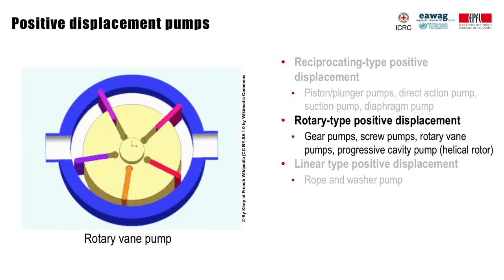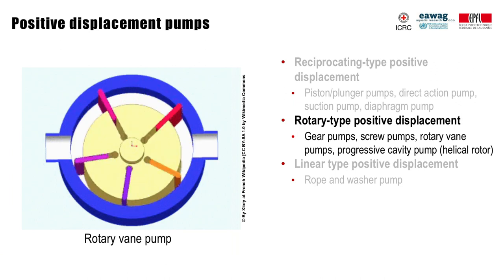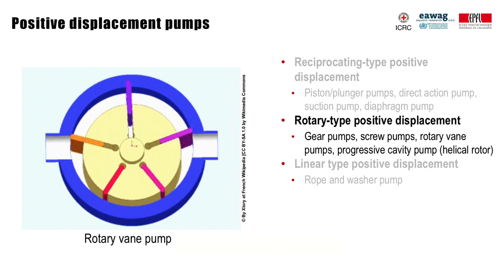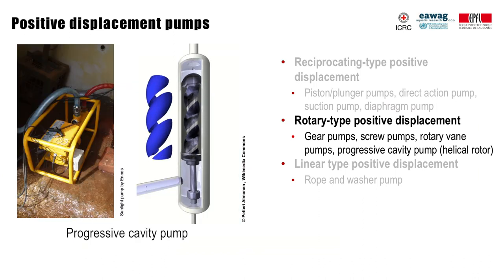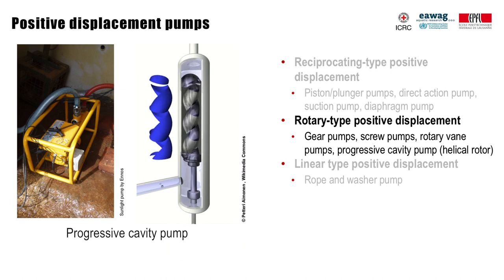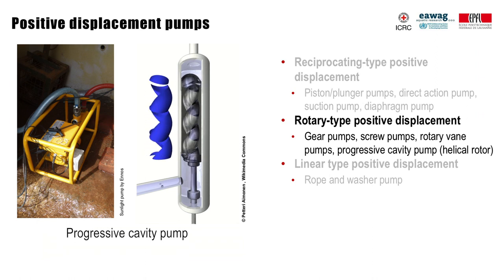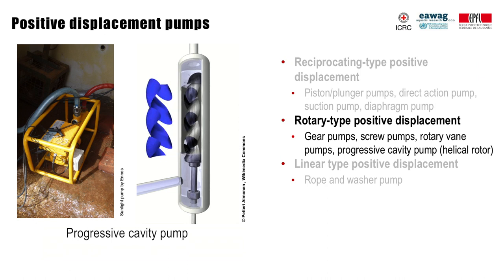Rotary type positive displacement pumps use rotating mechanisms that create vacuum and capture and draw water. A rotary vane pump consists of vanes placed in a circular rotor that rotates inside a circular cavity. The centers of these two circles are offset, causing the vanes to slide in and out of the rotor, creating chambers. A progressive cavity pump, also known as a helical rotor pump, transfers water by progressing it through a sequence of small-sized cavities when the rotor turns. This type of pump is a fixed flow pump, operating at a constant flow rate, which is proportional to rotation speed and almost independent of head. It is robust and less sensitive to particles in water than other rotary positive displacement pumps, and can be used to pump sludge, though abrasive materials will damage it. It is quite a common pump used for motorized pumping of water from boreholes.